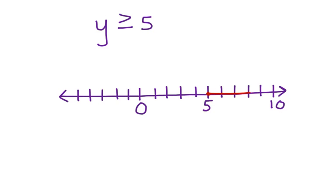Then I can draw my line to the right with an arrow showing that all the values including 5 greater than 5 will work for this inequality.